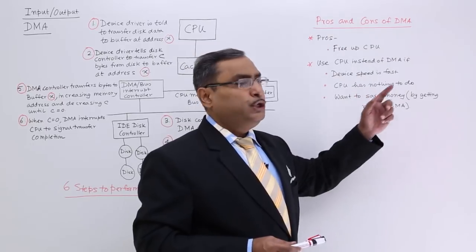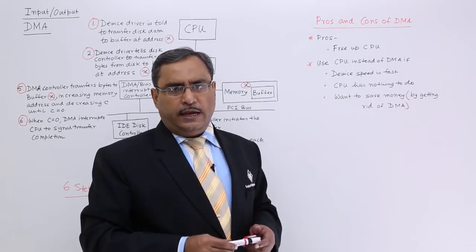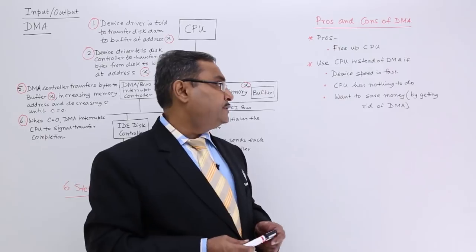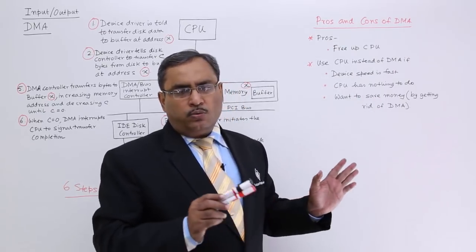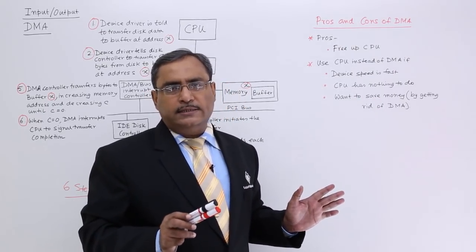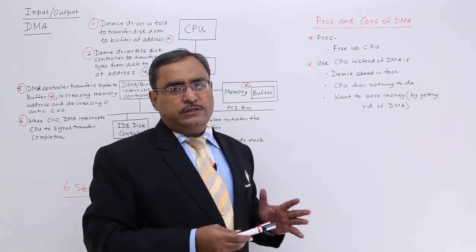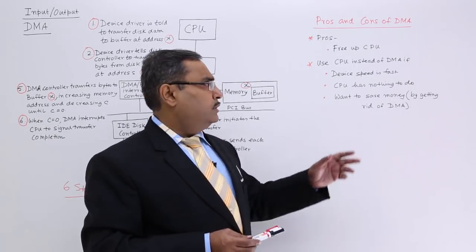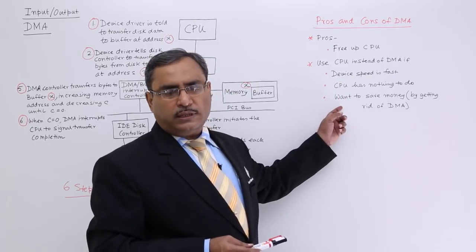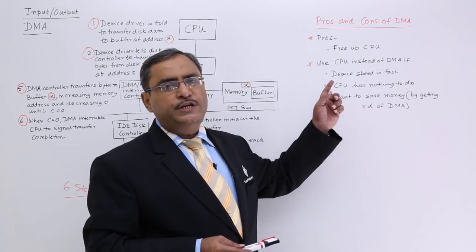CPU has nothing to do. Now CPU is sitting idle, so let us involve CPU in the IO transfer. Want to save money? I do not want to purchase DMA because that will increase the cost of my system. So let the CPU do the job. In that case obviously you can go for the CPU. There are three causes for which you can go for CPU data transfer instead of DMA data transfer.